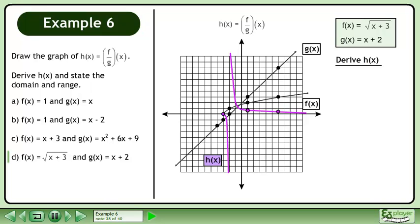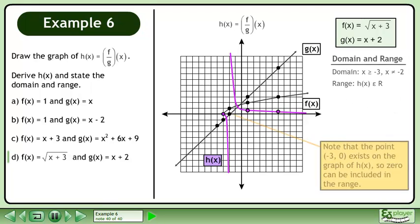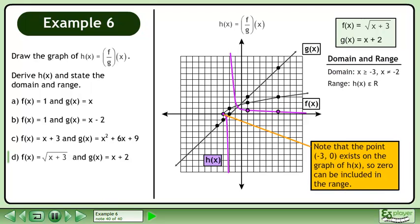We'll derive the function h. Replace f with the square root of x plus 3, and replace g with x plus 2. The domain of h is x is greater than or equal to negative 3, with the restriction that x cannot equal negative 2. The range is h belongs to the set of real numbers. Note that the point exists on the graph of h, so 0 can be included in the range.